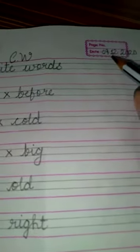So take out your English notebook and write today's date 09122020 that is 9th December 2020 and then write CW.